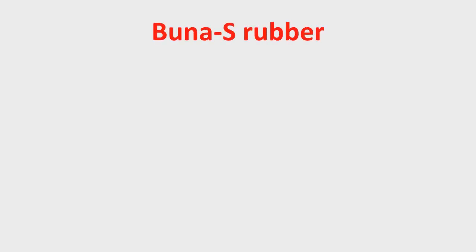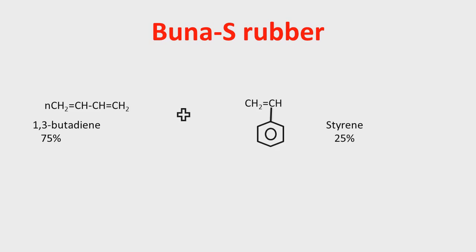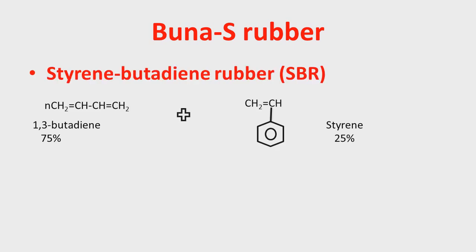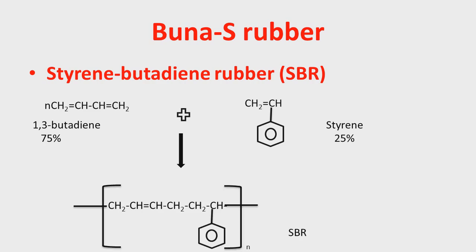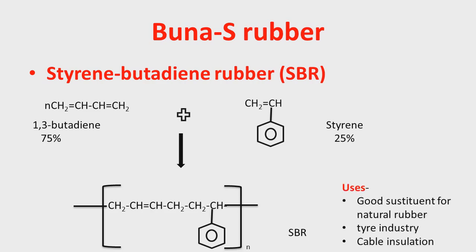Now let's look at some examples of synthetic rubber. The first is Buna-S rubber. Buna stands for butadiene (also known as 1,3-butadiene) and S stands for styrene — these two are the monomers. Buna-S is also called styrene-butadiene rubber or SBR, which is its trade name. Since it is obtained from two different monomers it is called a copolymer. On polymerization the double bonds break and extend into a chain, with the double bond placed where the carbon valency is lower, giving the SBR structure. Buna-S is a good substitute for natural rubber, has good strength and resistance, and is used in the tyre industry, cable insulation, and footwear making.